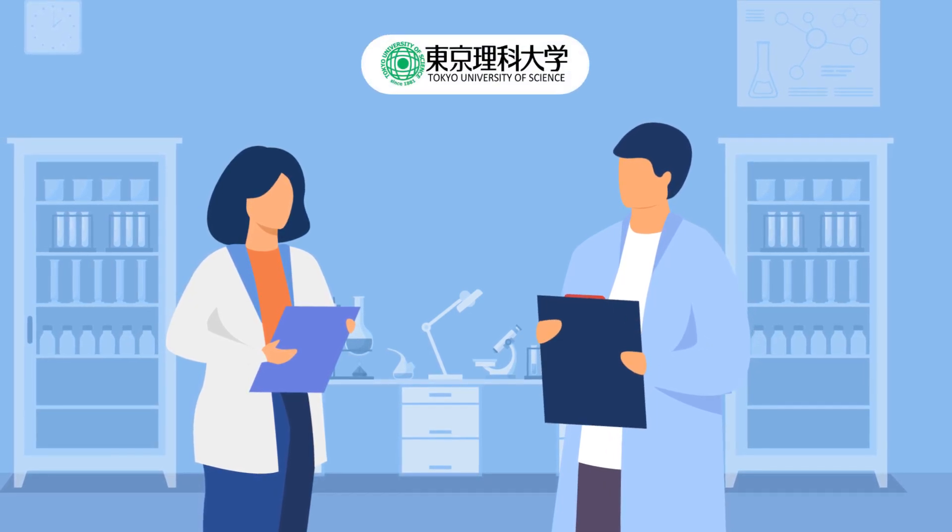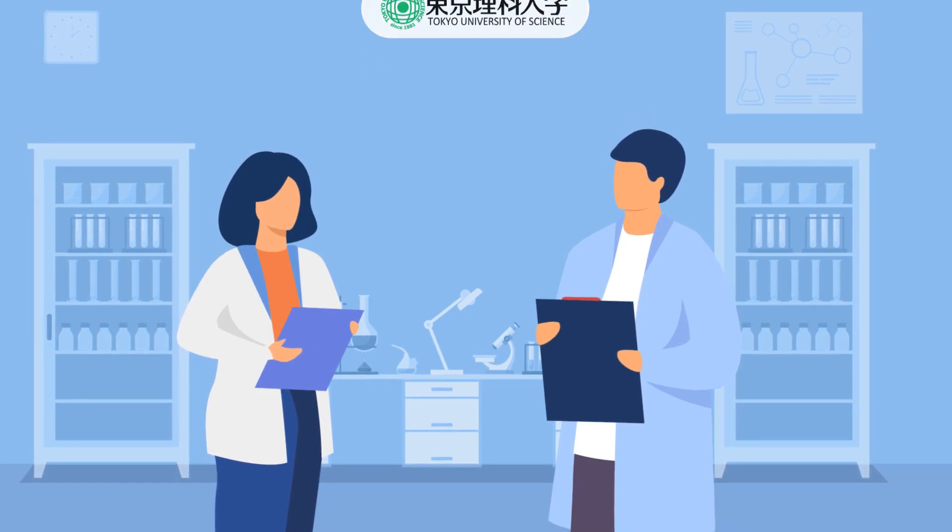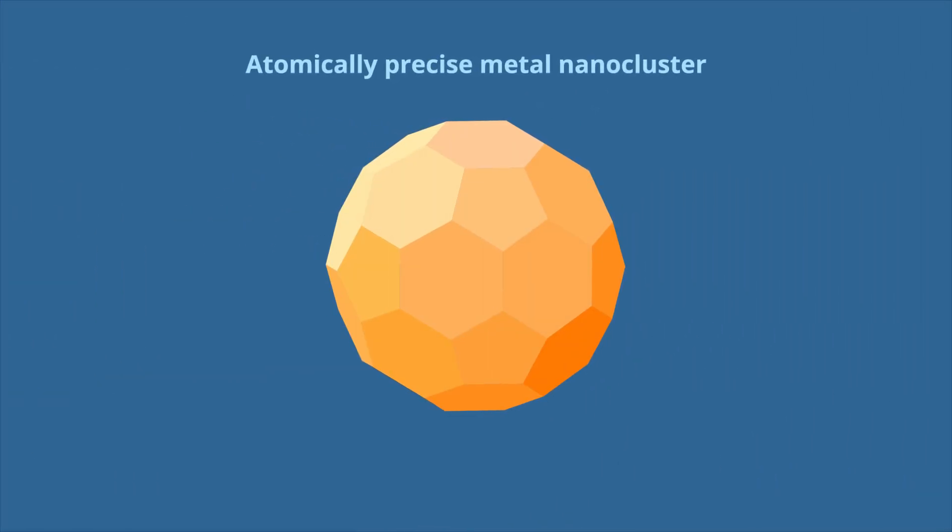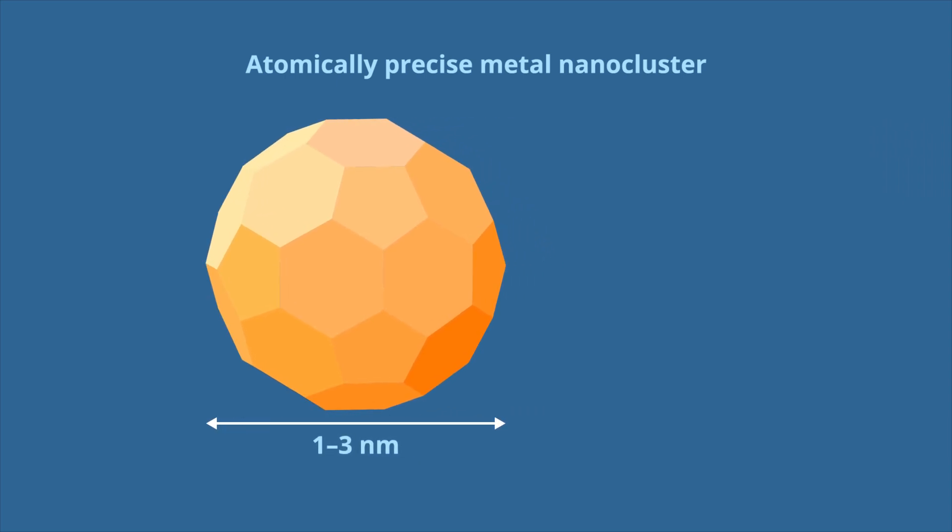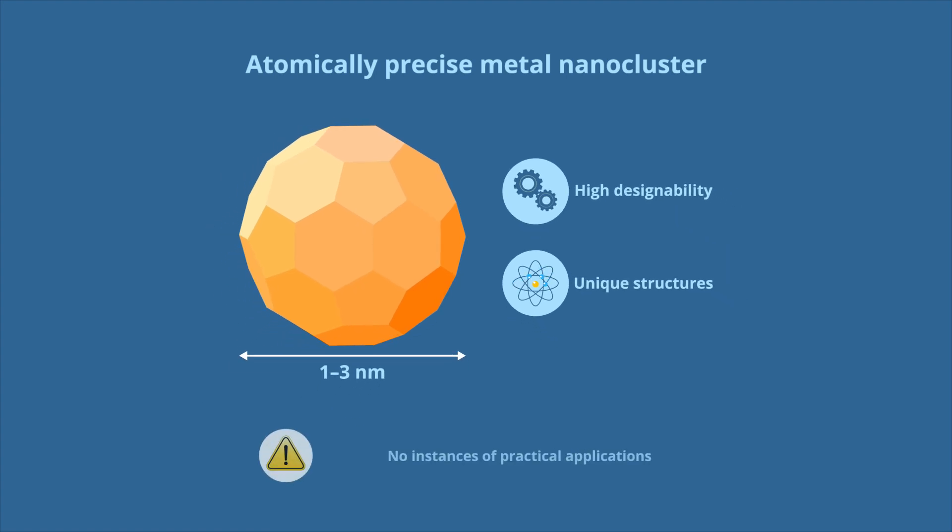Recently, researchers from Tokyo University of Science in Japan effectively addressed these challenges by utilizing atomically precise metal nanoclusters, tiny aggregates of metal atoms 1 to 3 nanometers in size that are known for their high designability and unique geometric and electronic structures. However, there have been no instances of practical applications of metal nanoclusters until now.